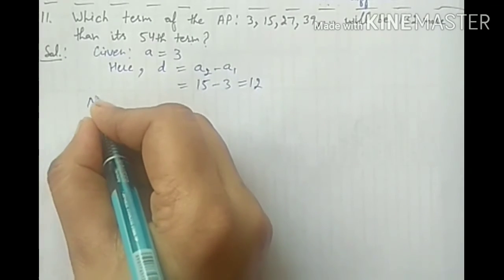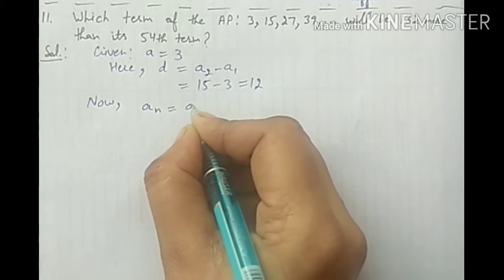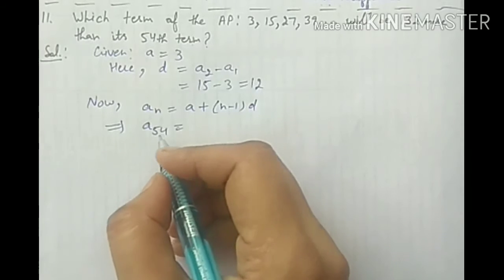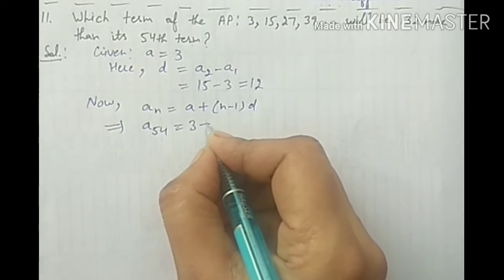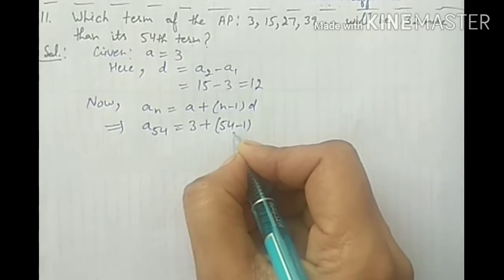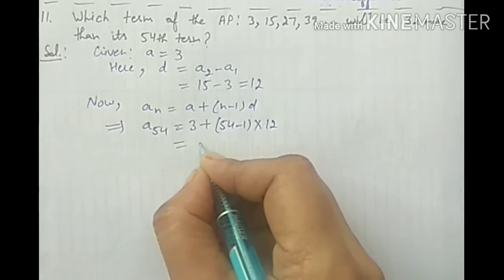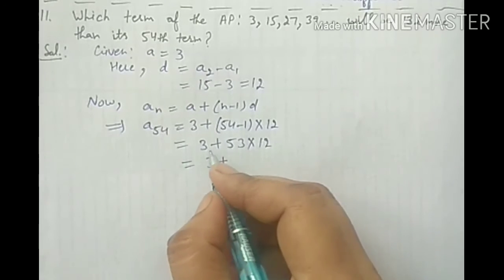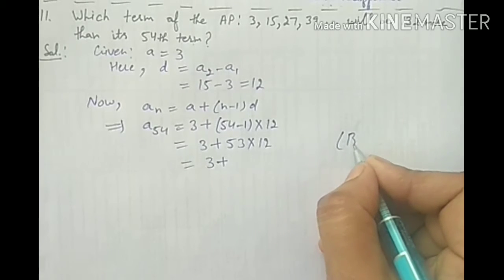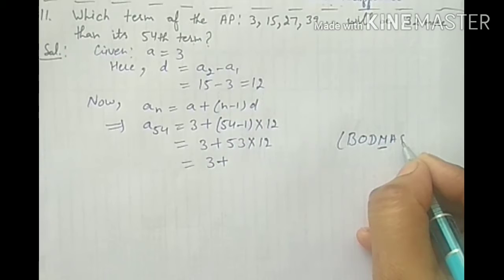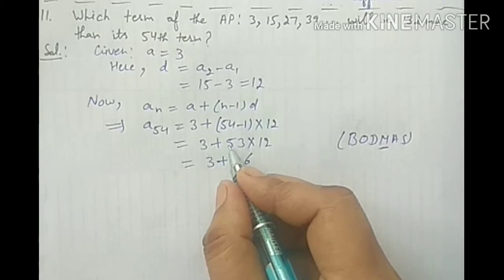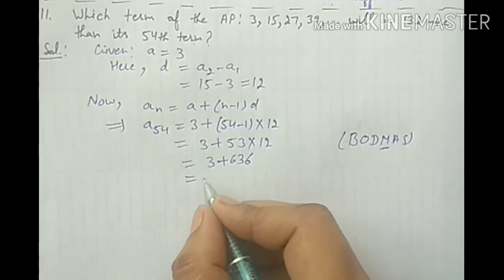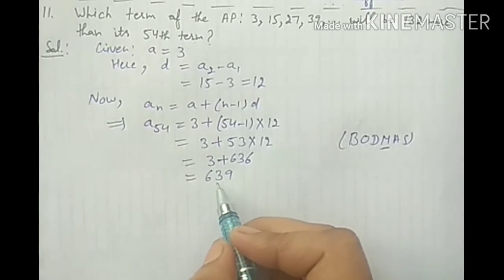We know that AN = A plus N minus 1 into D. We have to find out the 54th term, so at the place of N put 54: A54 = 3 plus 54 minus 1 into 12 = 3 plus 53 into 12. हम board BODMAS का use करेंगे - first multiply, then addition. 53 into 12 = 636. So A54 = 636 plus 3 = 639. Hence the 54th term is 639.